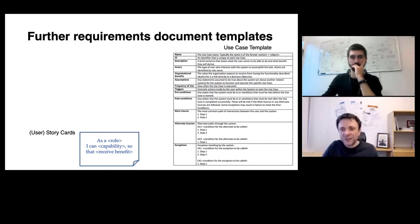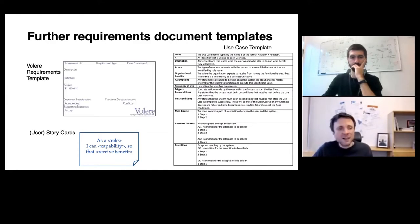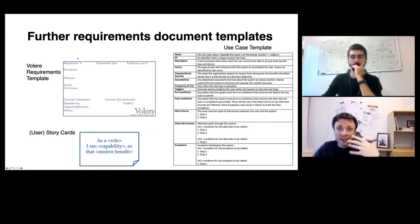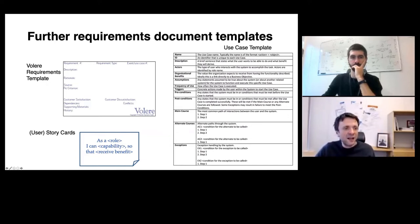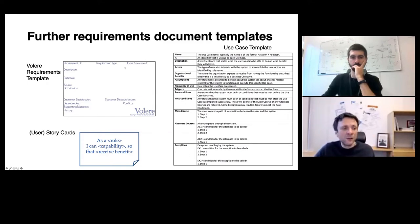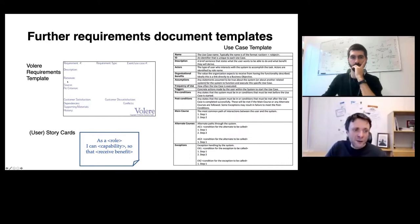Use case templates and user stories are typically used for specifying functional requirements. Another template worth mentioning is the Volere requirements template, which takes a more abstract view on the notion of a requirement and serves as a template to document requirements — for example in elicitation workshops. It provides many attributes: requirement number, type or class (functional, non-functional), relationship to a use case, description, rationale, and so on.